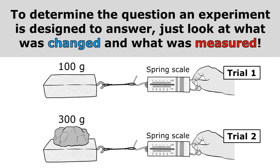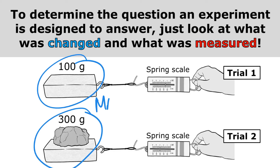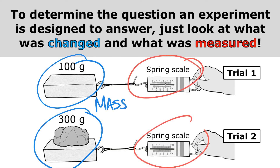To determine what this experiment was designed to answer, I just look at what was changed, which was the mass, and I look at what was measured, which was the force. So this experiment must have been designed to answer the question: how does the mass of an object affect the force needed to pull it?